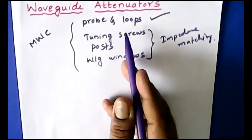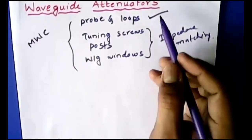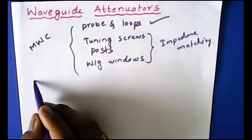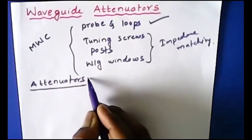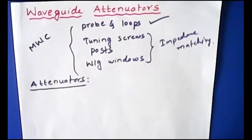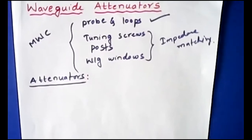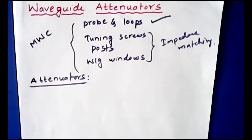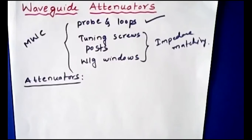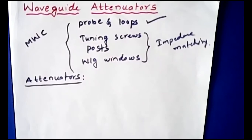Now I'm going to extend to the next topic in the second unit — waveguide attenuators. The name itself suggests that it attenuates the signal being transmitted. Can any one of you tell me what the applications are regarding these attenuators? What is the purpose of attenuating the signal? Please put your answers in the chat box.